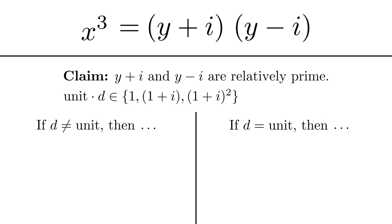I'll first focus on the situation where d is not a unit. So that means (1+i) divides d and consequently (1+i) divides x³. Now I can take the norm of both of those and I find out that 2 divides x⁶.